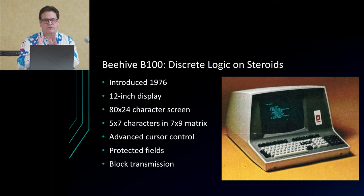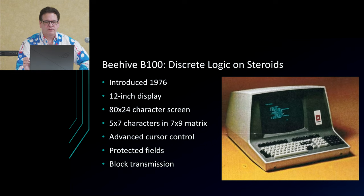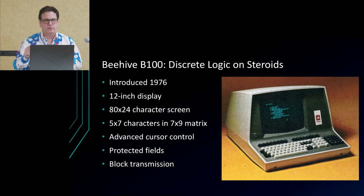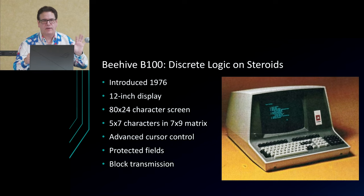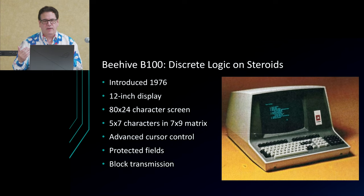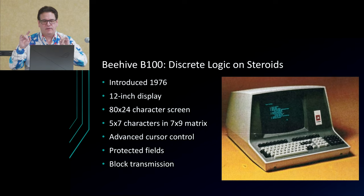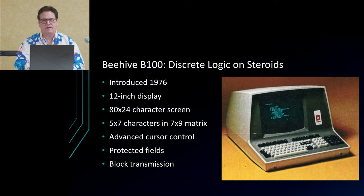The Beehive B100 has advanced cursor control — you can position the cursor anywhere on screen and do editing operations. It has protected fields: you can configure the screen so certain portions are where users can enter data, while the rest is protected. Protected areas are labels on a fill-out form (name, address, phone number), and unprotected areas are the data-entry fields. You do all local editing, enter data into the unprotected fields, press a key, and the terminal reads out the unprotected portions and transmits them back to the host. All of this in discrete logic with no microprocessor — pretty tricky.